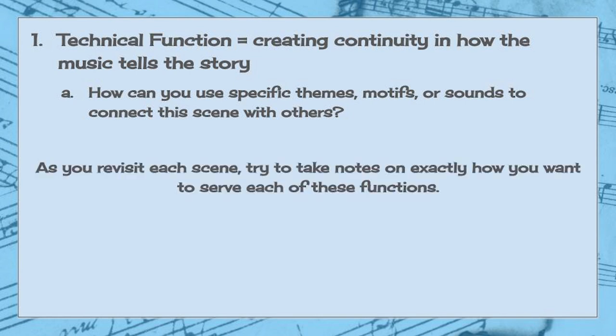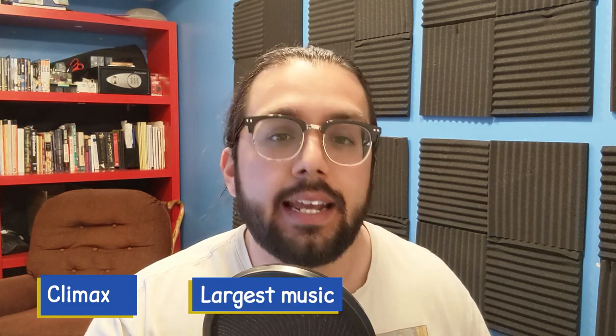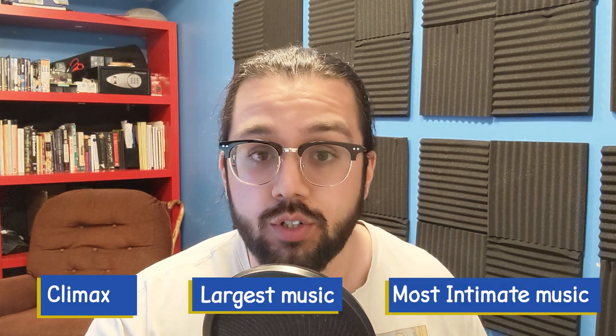As you revisit each scene one at a time, try to take notes on exactly how you want the music to serve each of these three functions. As you do this, you'll start to see patterns take shape and notice opportunities to revisit specific musical ideas as the story develops. Along the way, you should also take notes on which scene contains the climax of the film, as well as which scenes will require the largest and most intimate pieces of music in your soundtrack, plus any miscellaneous notes about anything that grabs your attention in each individual scene.